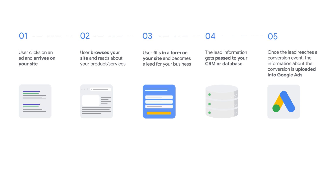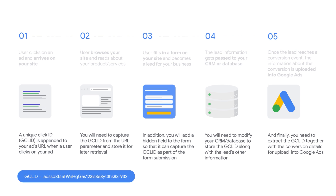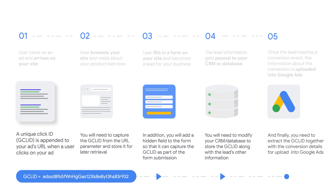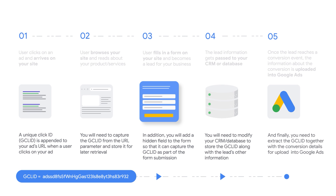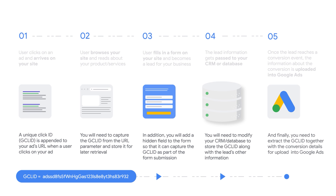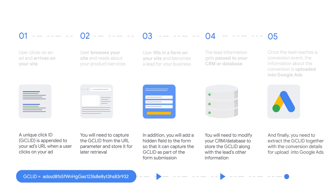Now that we've seen this from the user's perspective, let's talk about what's actually happening behind the scenes. When the user's click comes to your website, it has a unique ID called the GCLID that is central to this process. Once they're on your site, you're going to need to capture this GCLID and save it for later usage. Because when they fill out the form, you're going to have to pass that GCLID value along with the lead information so that it ultimately makes it into your CRM database. And later on, when that conversion event happens, it's this GCLID that we need to extract to upload into Google Ads.